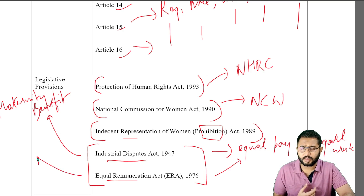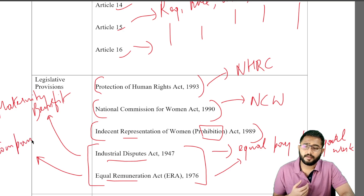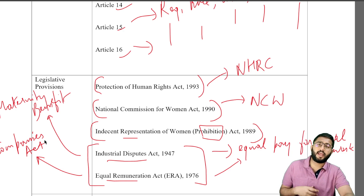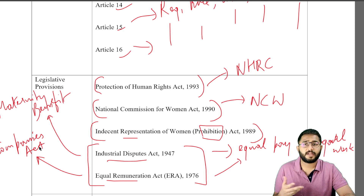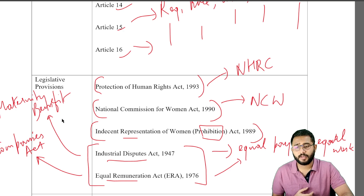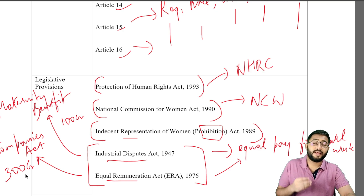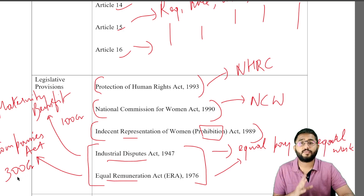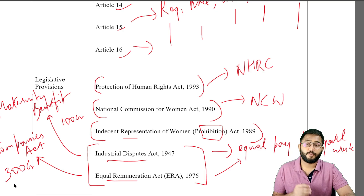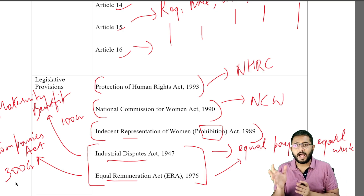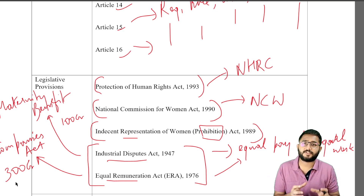We can also talk about the Companies Act, which has a significant provision stating that any listed company whose paid-up capital is about 100 crores, or any public company whose annual turnover is over 300 crores, needs to have at least one woman director. You can see there is a harmony being created through these legislations and the constitutional provisions.